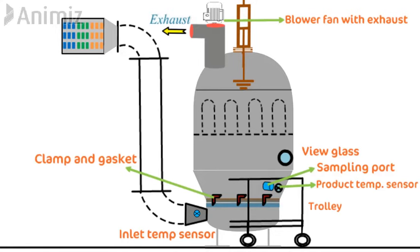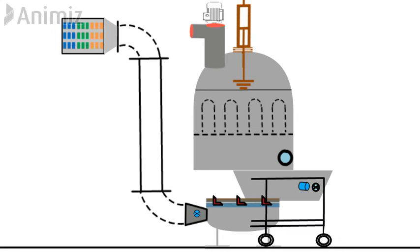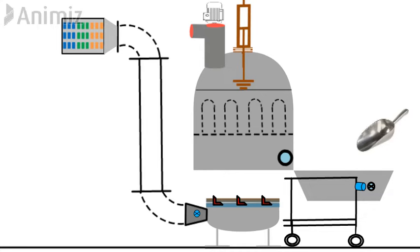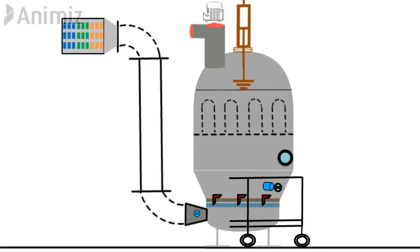Now let's see how a fluidized bed dryer works. First, we open the clamps and take out the product container by moving the trolley out. We charge the container with the product to be dried. The product container has a perforated bottom with a high mesh number sieve so that it only allows air to pass through and not the particles. After loading, it is moved back to its place with the clamps locked. After locking, the exhaust fan starts creating a partial negative pressure which draws air inside the chamber. This air is filtered and heated to a specified temperature and reaches the bottom wind inlet chamber.